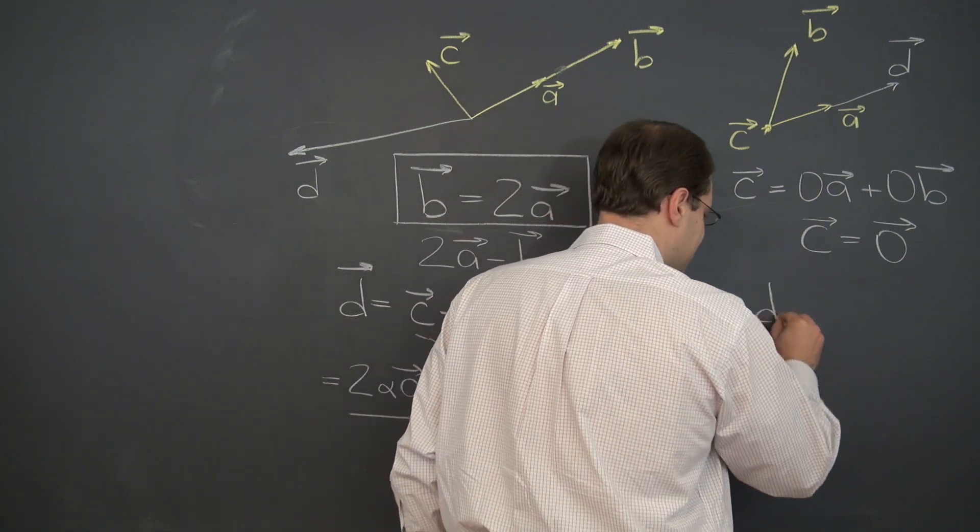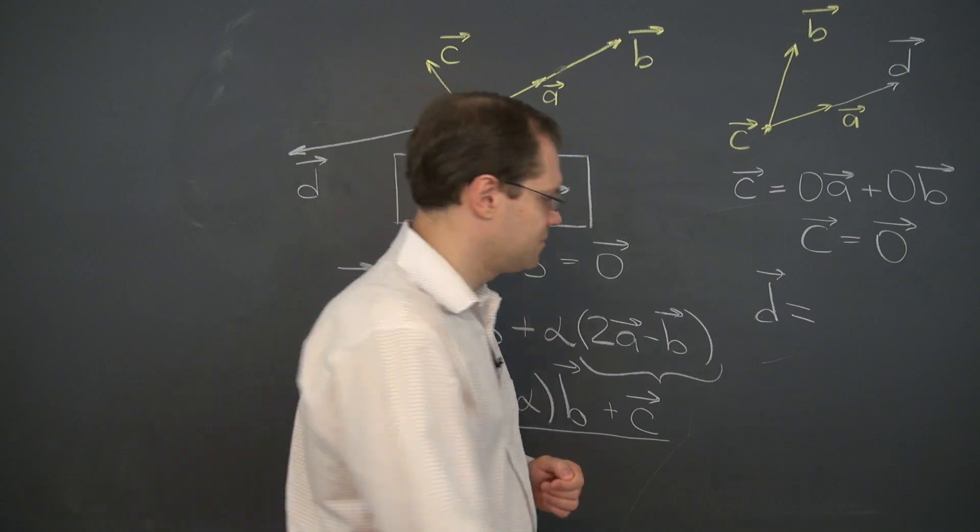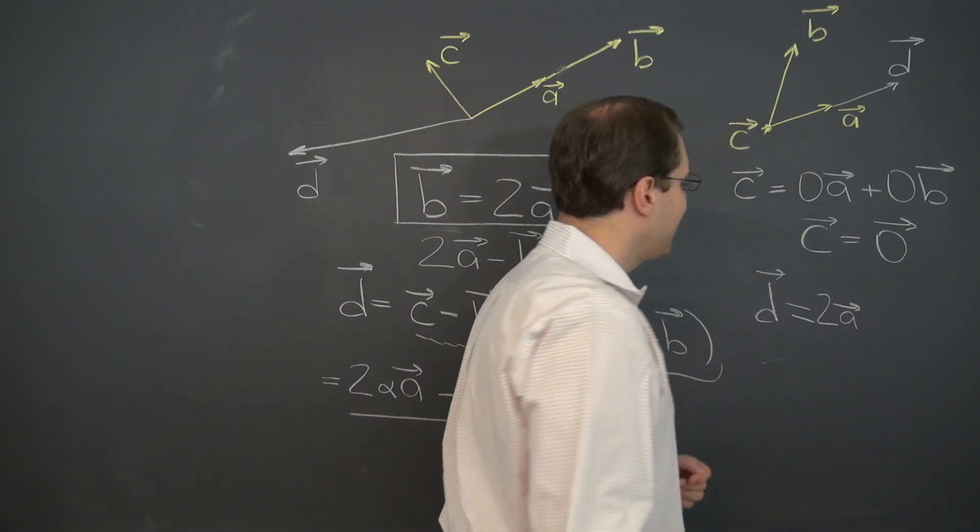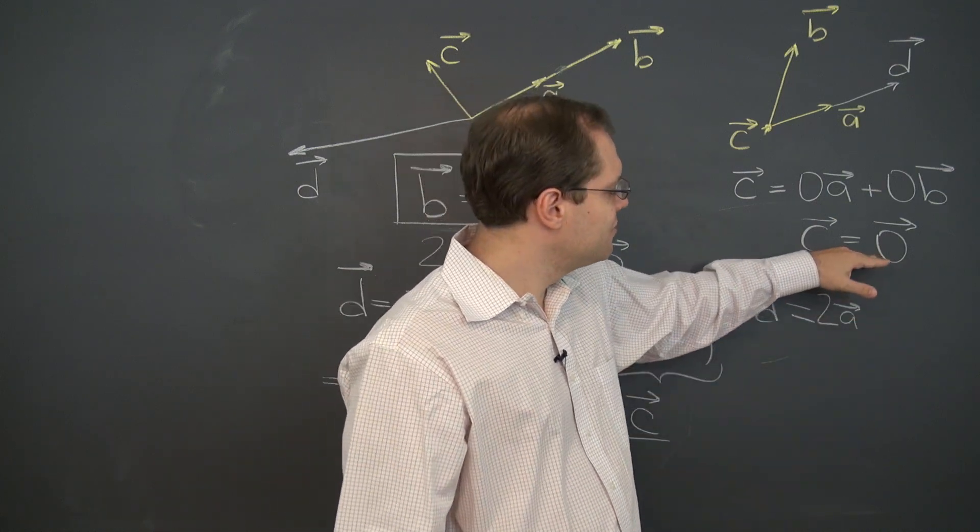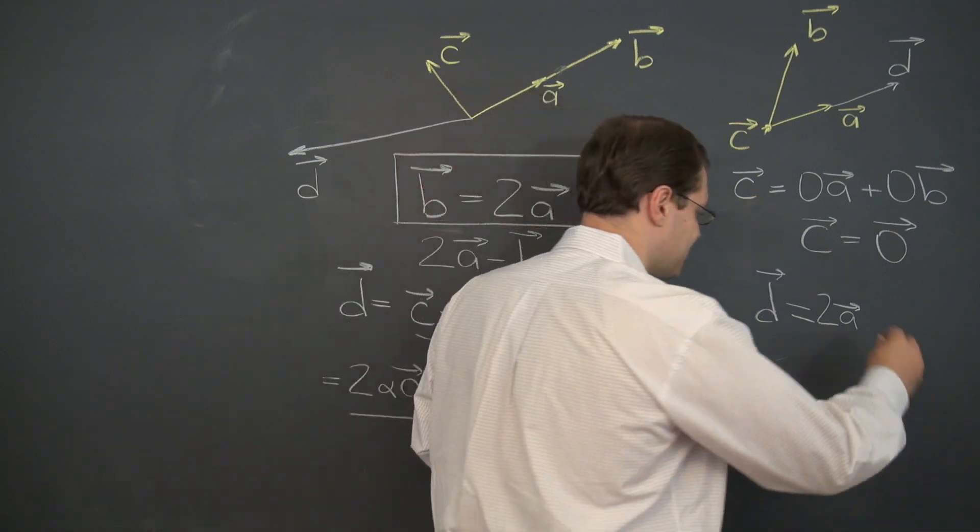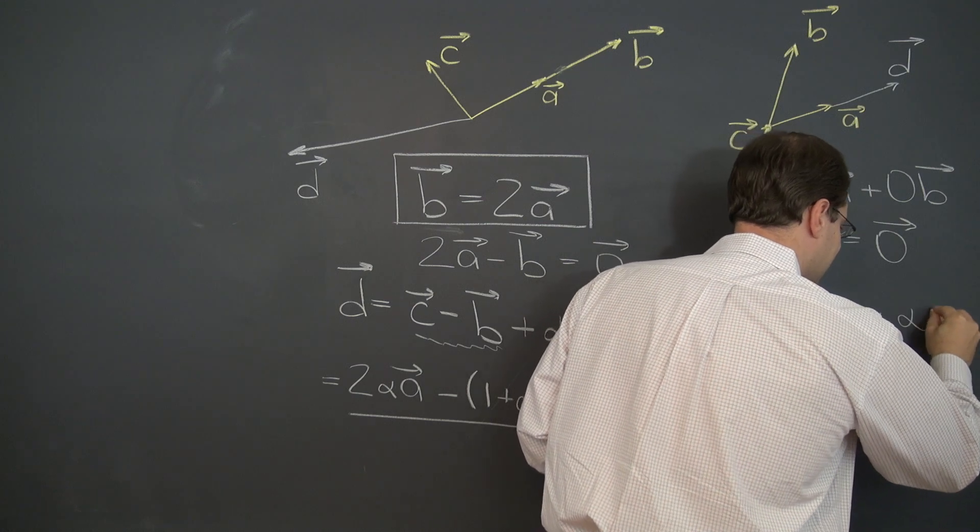Okay, now the rest is easy. D equals twice a. That's a particular way of doing it. And then you can add any proportion of this fancy zero. Not so fancy, but still substantial. Plus alpha c.